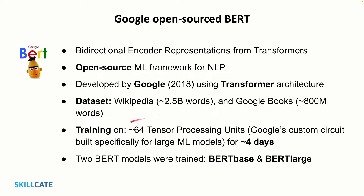Training on a data set this large took a long time. BERT's training was made possible thanks to a novel transformer architecture and sped up by using Tensor Processor Units, which is Google's custom circuit built specifically for training large ML models. With 64 of these TPUs, BERT training took around 4 days. Originally, there were two BERT models released by Google — BERT large and the smaller BERT base, which has slightly lower accuracy but is still comparable to other state-of-the-art models on performance. We shall be using BERT base for our hands-on in this tutorial.